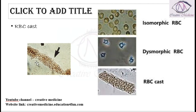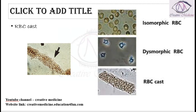RBC casts contain blood cells. Isomorphic RBCs have a normal shape and are separated from each other. Dysmorphic RBCs are separated but have an abnormal shape. In RBC casts, a group of RBCs are clumped together and have lost their normal physical structure.